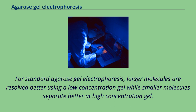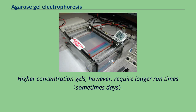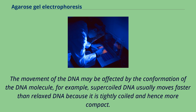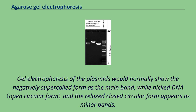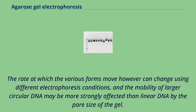For standard agarose gel electrophoresis, larger molecules are resolved better using a low concentration gel while smaller molecules separate better at high concentration gel; however, higher concentration gels require longer run times. The movement of DNA may also be affected by the conformation of the DNA molecule — for example, supercoiled DNA usually moves faster than relaxed DNA because it is more compact. In a normal plasmid DNA preparation, the negatively supercoiled form appears as the main band, while nicked DNA and the relaxed closed circular form appear as minor bands.